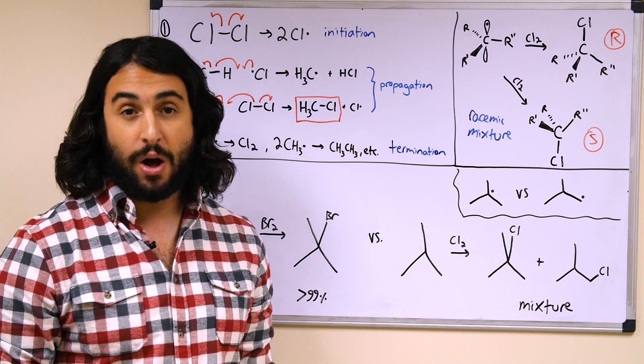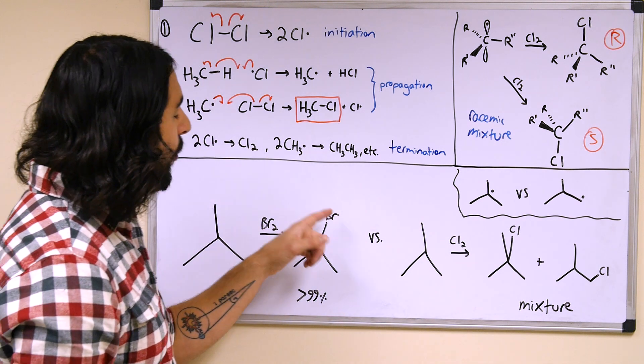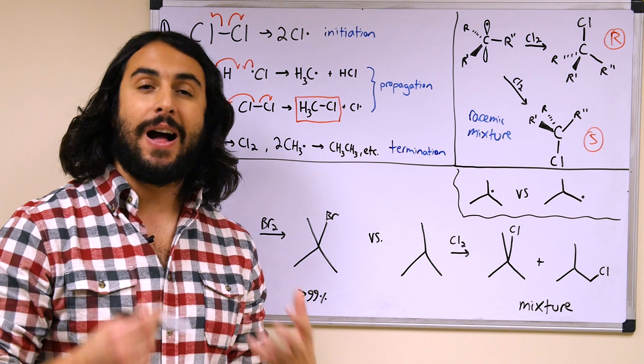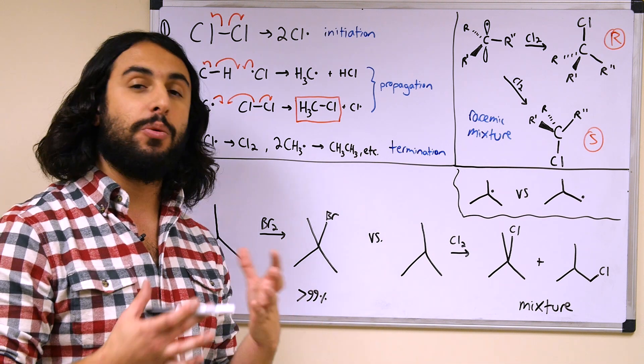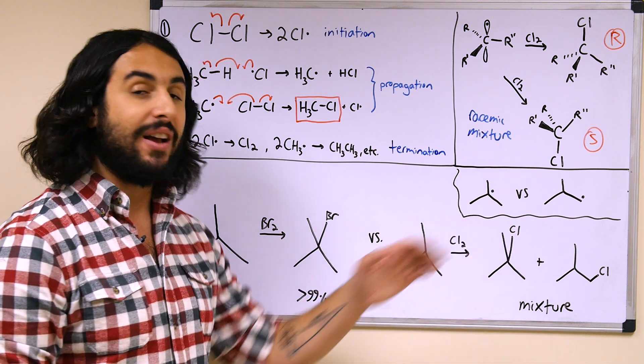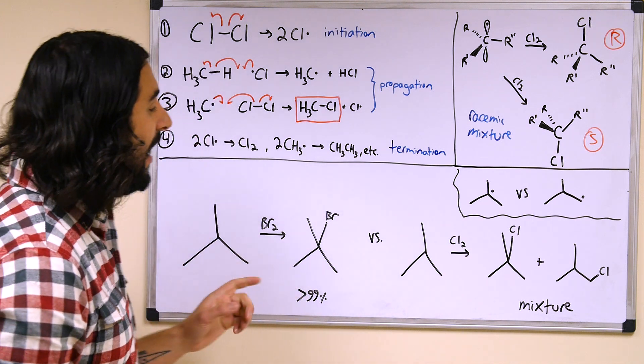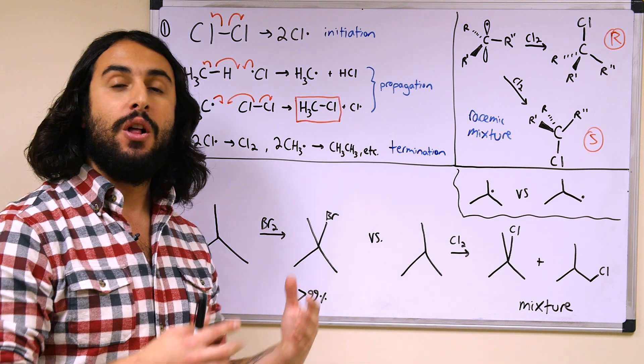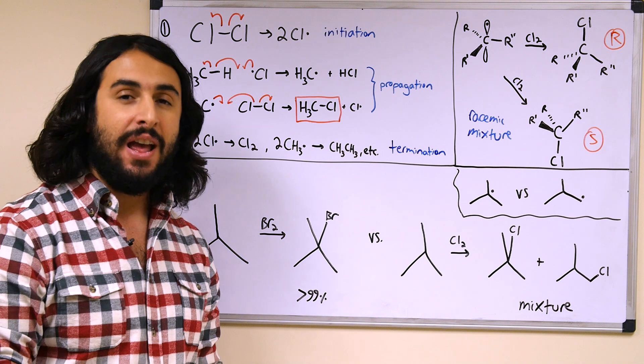Because the bromine radical can better accommodate the instability, or in other words it's not as unstable as the chlorine radical is, it can wait and follow the lowest energy pathway. That means that it is stable enough to follow a pathway that generates the lowest energy intermediate.